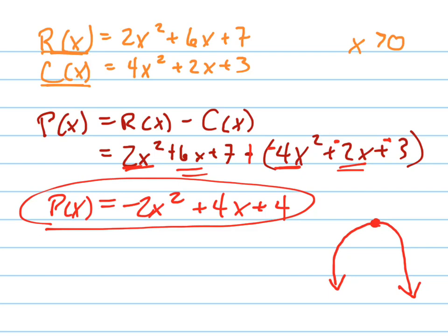I can use derivative, or I can do the negative B over 2A trick if you don't know calculus yet. But since we do know calculus, we're going to do the derivative. P prime of X equals negative 4X plus 4.